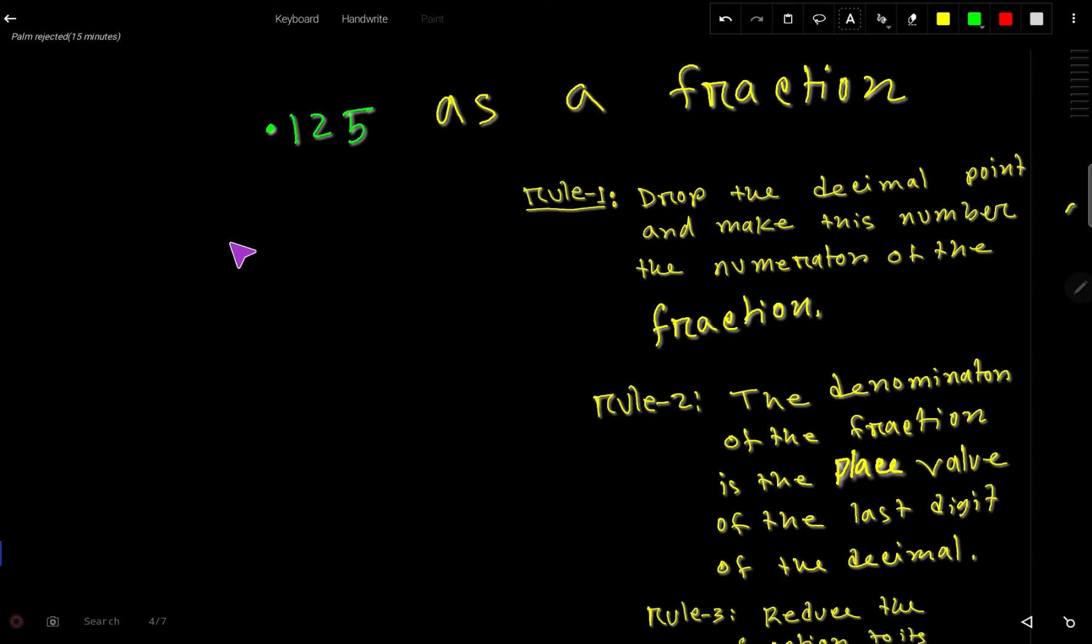First step: a fraction has two parts, the upper part and lower part - the numerator and denominator. To form the numerator from this decimal, just drop the decimal point and write the number.